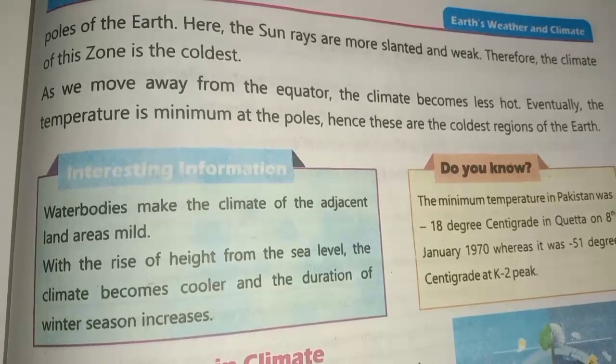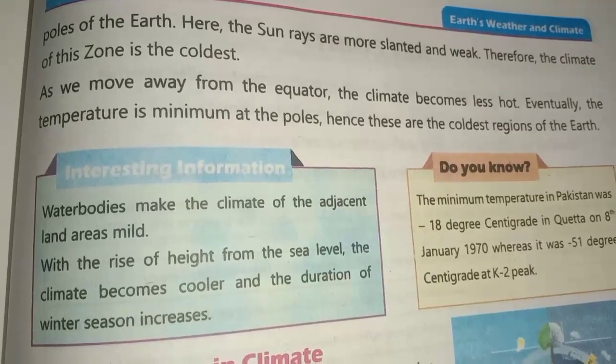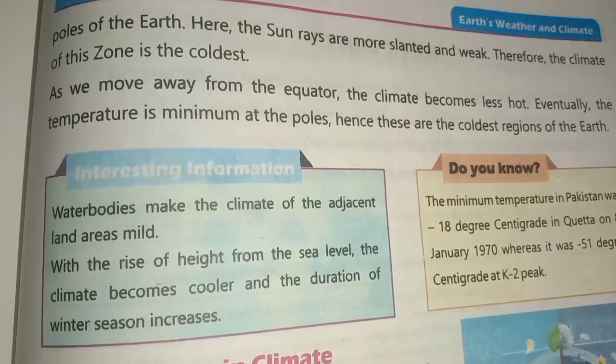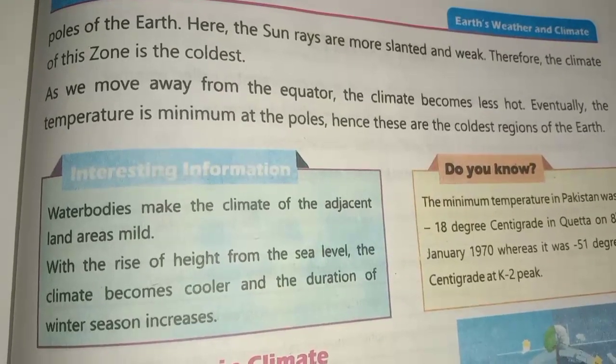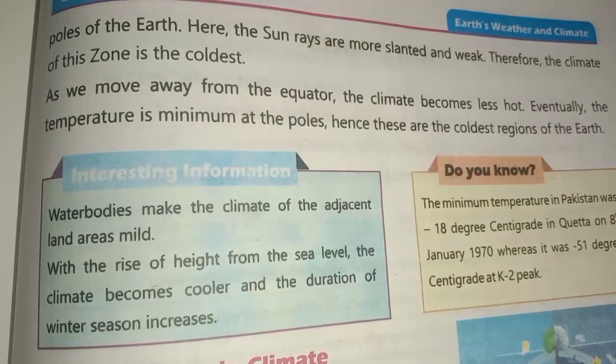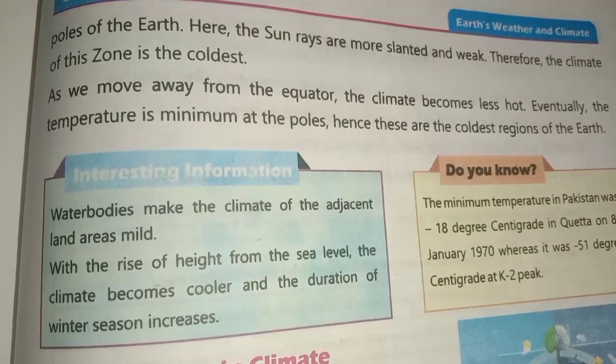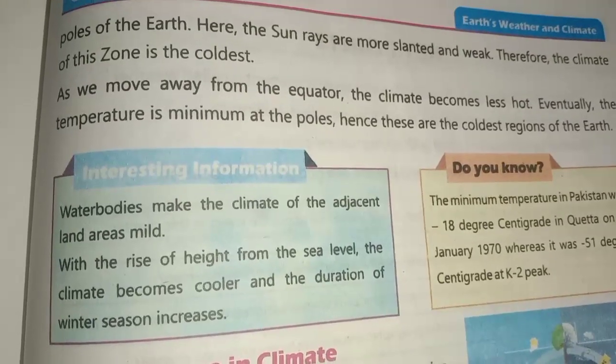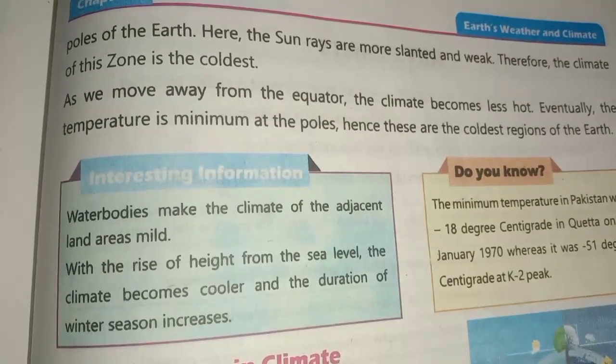As we move away from the equator, the climate becomes less hot. Eventually the temperature is minimum at the poles. Hence, these are the coldest regions of the earth.